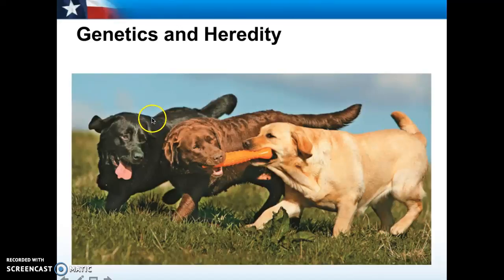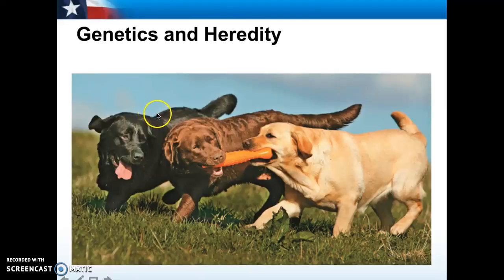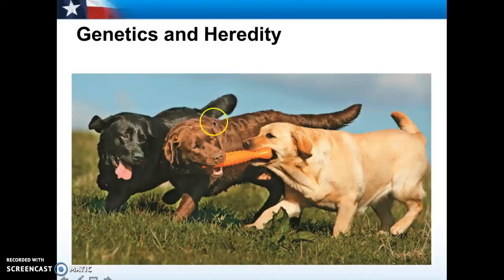They share the same trait for fur color but they have different characteristics for that trait — meaning that this dog's fur color is black, this one's fur color is brown, and this one's fur color is yellow or orange. You have to remember that a trait is the fur color while the characteristics will be the different possibilities that you have. In this case, you have three possibilities.